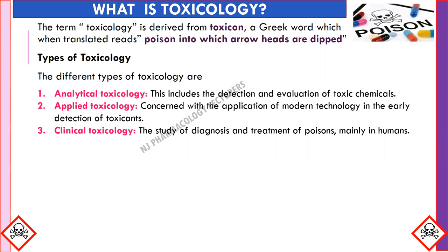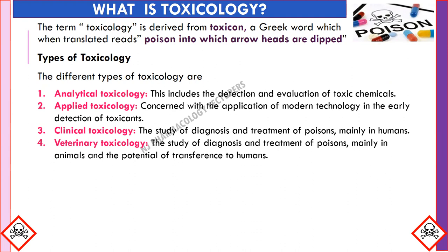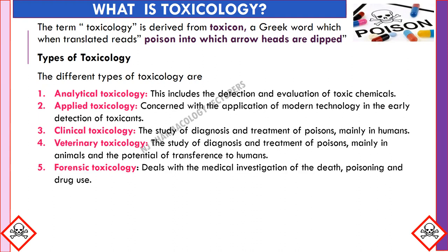Third is clinical toxicology, the study of diagnosis and treatment of poison mainly in humans. Fourth is veterinary toxicology, the study of diagnosis and treatment of poison mainly in animals and the potential of transference to humans.